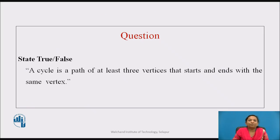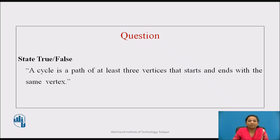Here is a time to reflect on the content we have learnt. State whether the following statement is true or false: A cycle is a path of at least three vertices that starts and ends with the same vertex. You can pause the video and think about the answer. The statement is true — a cycle is a path of at least three vertices that starts and ends with the same vertex.